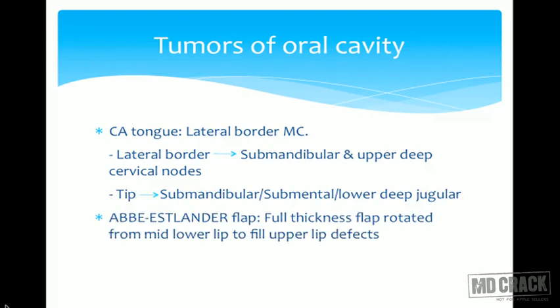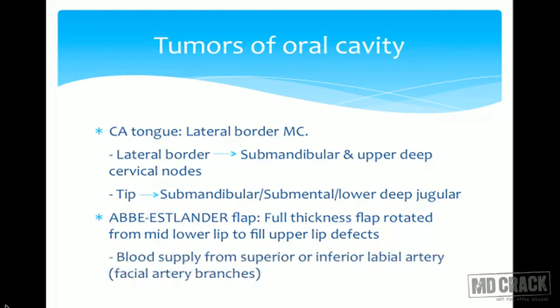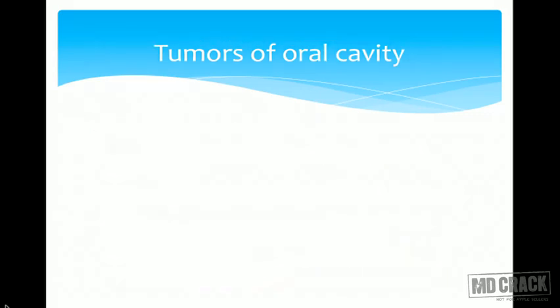The Abbe-Estlander flap is a full-thickness flap which is rotated from the mid-lower lip to fill upper lip defects. The flap is rotated from the lower lip to fill defects in the upper lip. Its blood supply is from the superior and inferior labial arteries, which are branches of the facial artery.